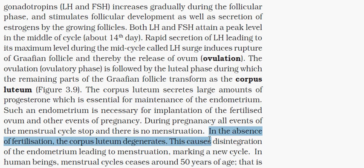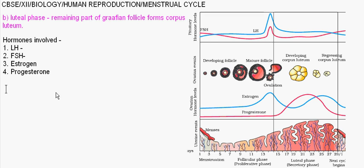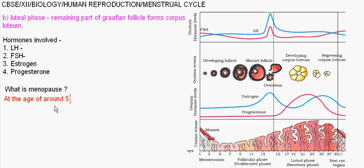Now coming to menopause — from the term itself, menopause means it stops the menstrual cycle. At around the age of 50 years, the menstrual cycle is stopped in females. This is called menopause.